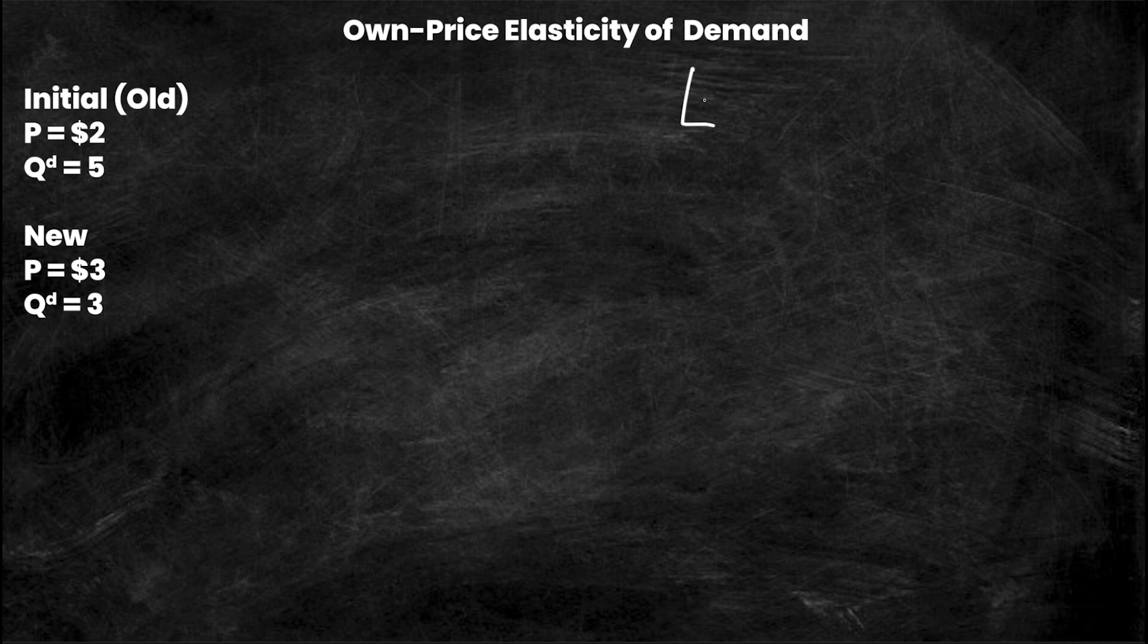Recall from last week, own-price elasticity is equal to the percentage change in Q over the percentage change in the determinant, and in this case the determinant is P. But do you know how to calculate percentage change? That's what we're going to go over today.